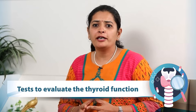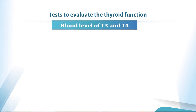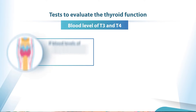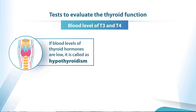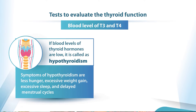In the blood we can easily test these two hormones, T3 and T4. If their level is low, we call it hypothyroidism. And if you have hypothyroidism, you will have symptoms of slow metabolism — that is less hunger, excessive weight gain, excessive sleep, and delayed menstrual cycles.